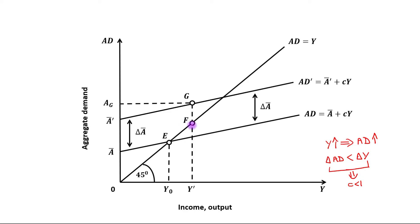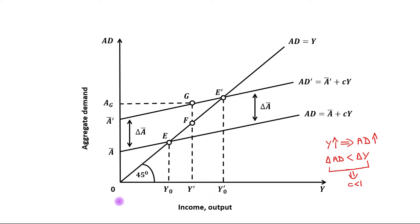Now the new equilibrium will be achieved at the intersection point of the 45-degree line and the new AD curve, that is point E dash. The new equilibrium level of output is OY dash zero.